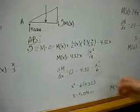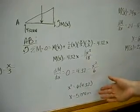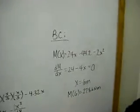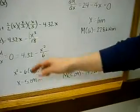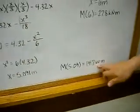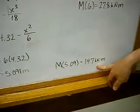This is the value of X between A and B which gives us our maximum moment. Plugging that value of 5.09 meters into our moment equation, we get our maximum moment between A and B of 14.7 kilonewtons times meters.